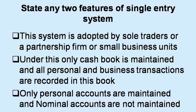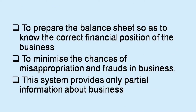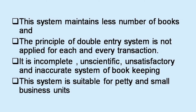Only personal accounts are maintained and nominal accounts are not maintained. This system provides only partial information about the business and maintains fewer books of accounts. The principle of Double Entry System is not applied for each and every transaction. It is incomplete, unscientific, unsatisfactory, and inaccurate system of bookkeeping. This system is suitable for petty and small business units.